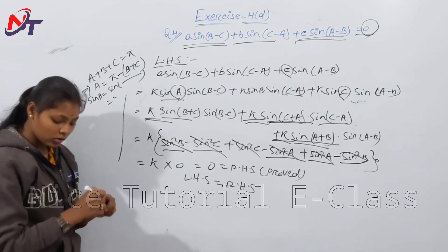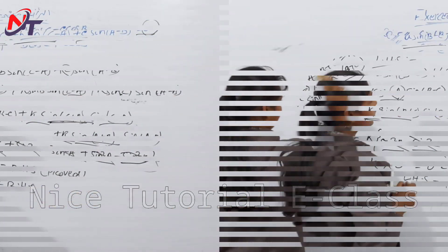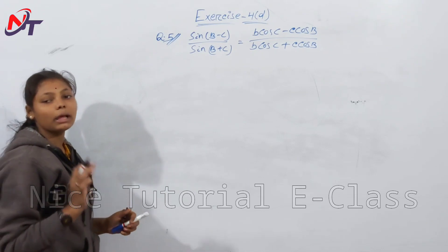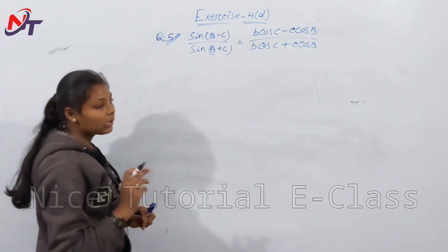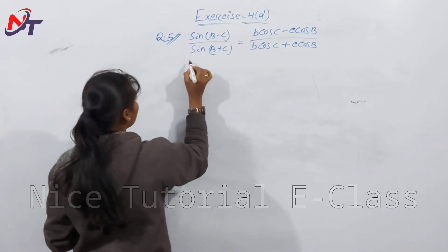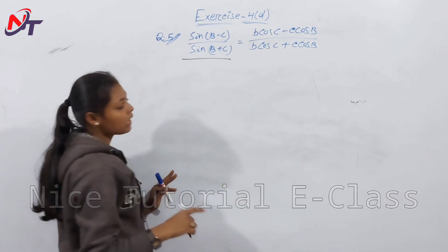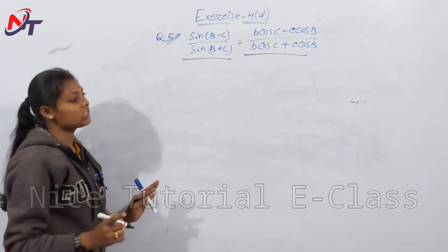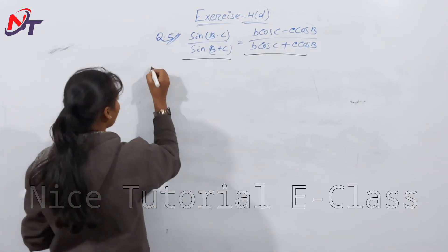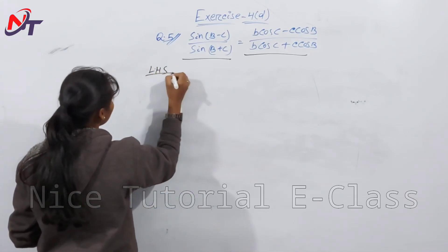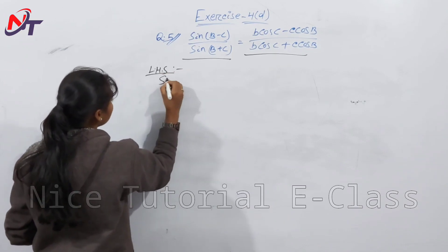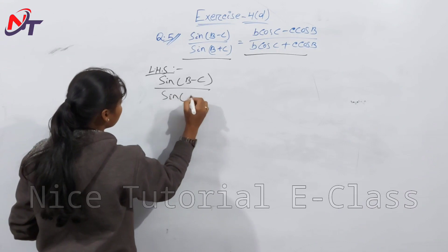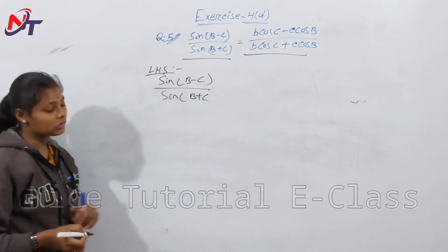Next question — Question number 5. In triangle ABC, prove that sin(B − C) / sin(B + C) = (b cosC − c cosB) / (b cosC + c cosB). We start with the left-hand side: sin(B − C) / sin(B + C).